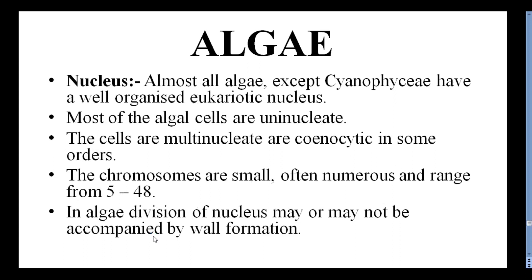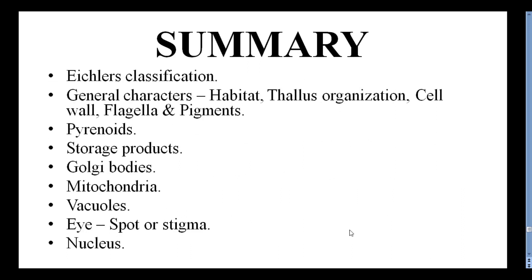Almost all algae except Cyanophyceae have a well-organized eukaryotic nucleus. Most algal cells are uninucleate, but cells that are multinucleate show a coenocytic condition in some orders. Chromosomes are very small and sometimes numerous, ranging from 5 to 48. The division of the nucleus may or may not be accompanied by wall formation.